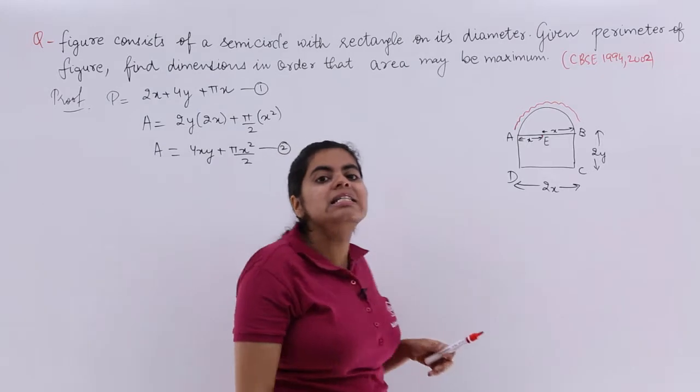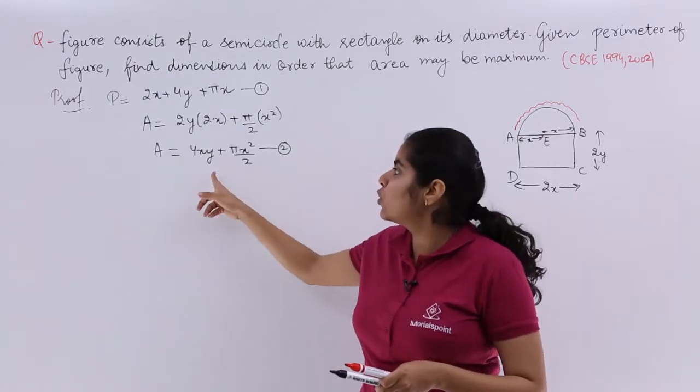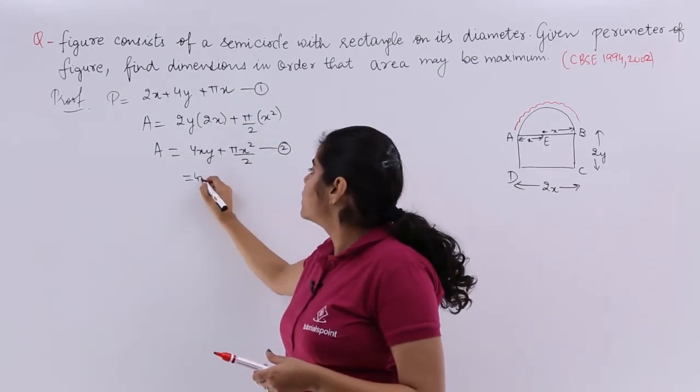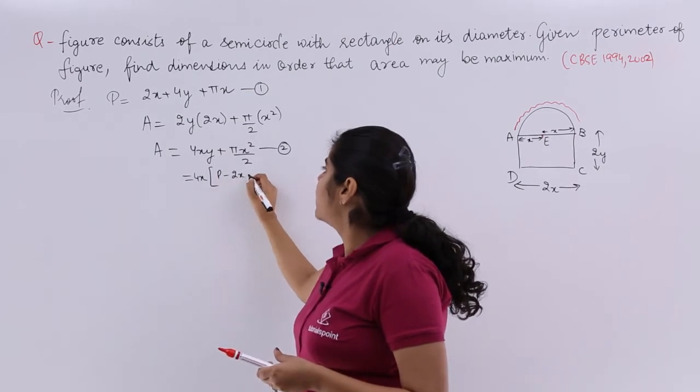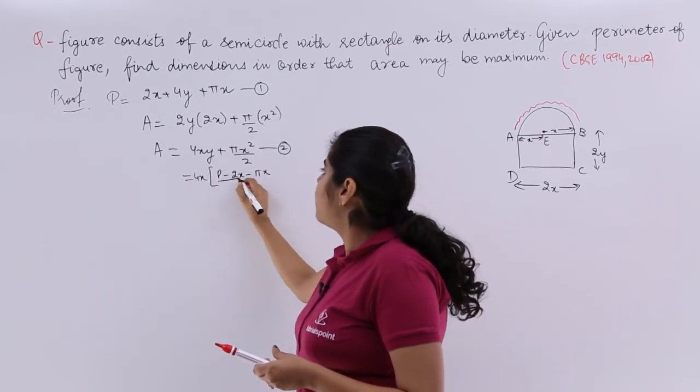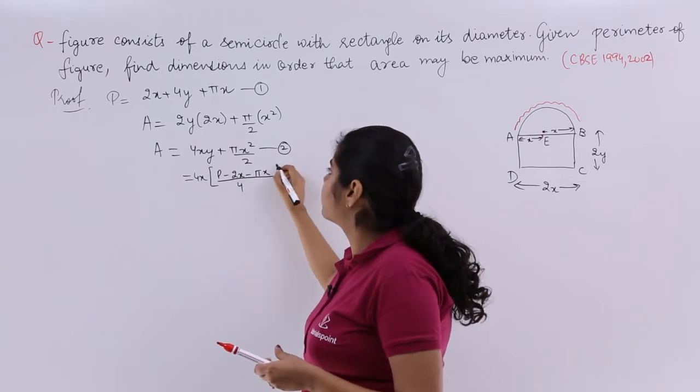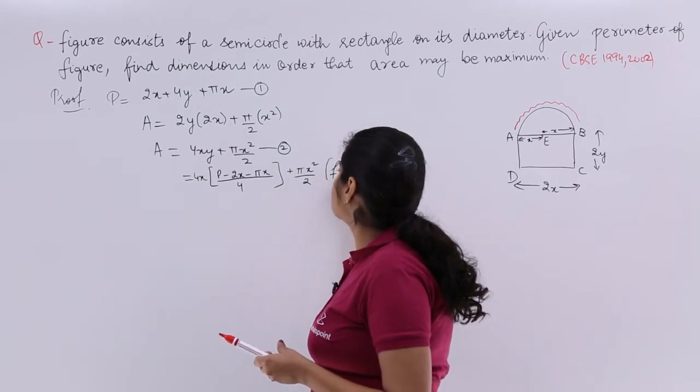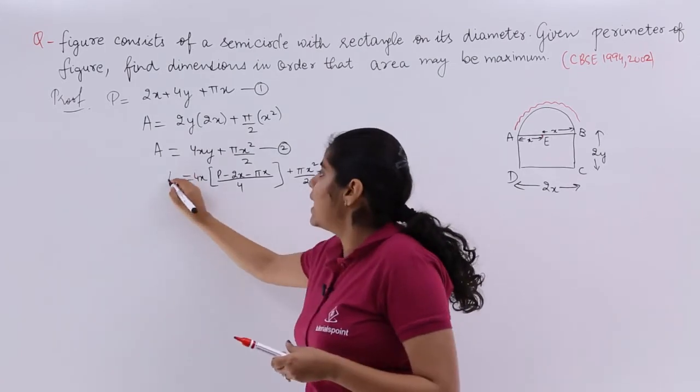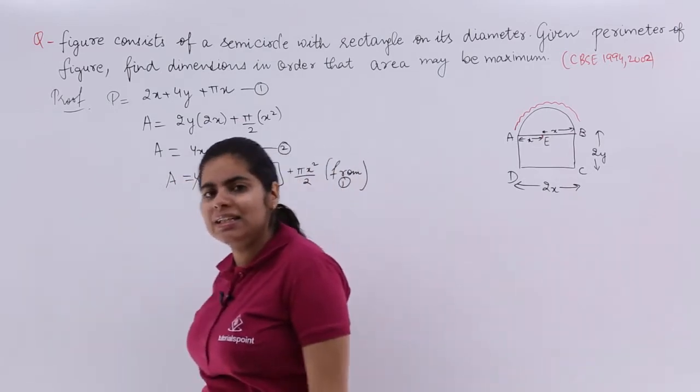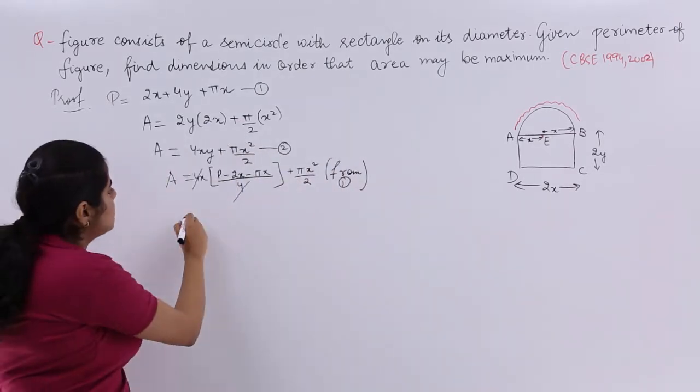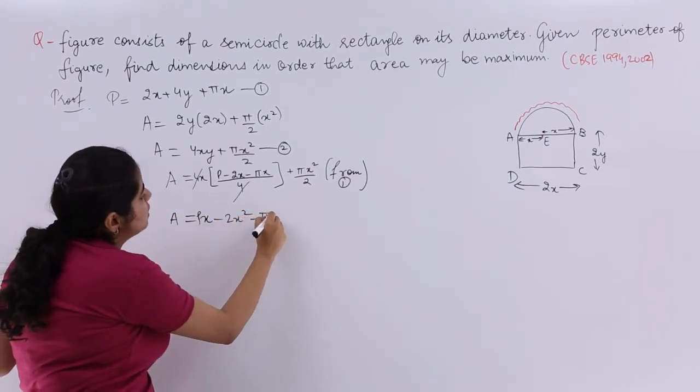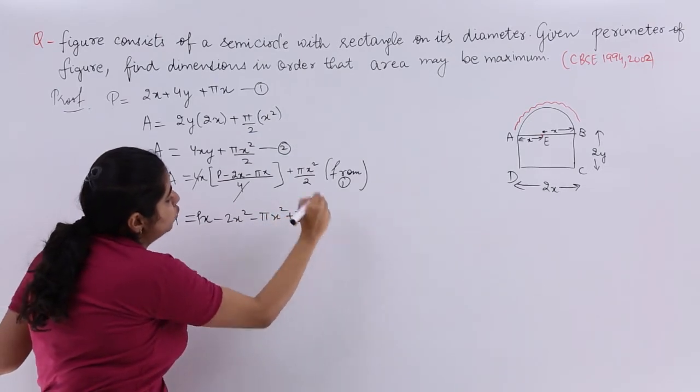Now you already know y is coming to picture and y is such which should not be there because we have to differentiate with respect to x. So from 1 let us find out the value of y. So it is 4y equals P minus 2x minus πx upon 4 and that is your y. It is nothing but x into P which is Px. Then it is minus 2x² minus πx² plus πx² by 2. Done.